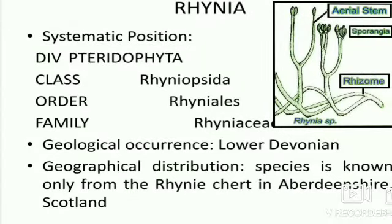Hello friends, welcome to my YouTube channel. Today in this video I am going to discuss the first genus of Pteridophyta, and that is Rhynia. Rhynia is actually considered as a fossil plant studied on the basis of fossil records. The systematic position: division is Tracheophyta, class is Rhyniopsida, order is Rhyniales, family is Rhyniaceae. Geological occurrence is the Lower Devonian period. Distribution is normally Scotland, where it was discovered.